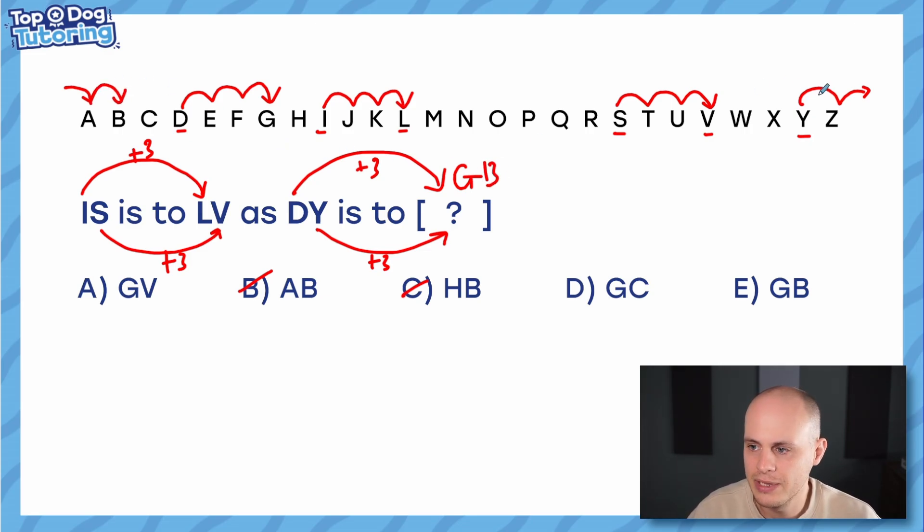Does that make sense? Let's just go over that again. So Y goes one jump to Z, two jumps to A, three jumps to B. Very much bear that in mind now for the next questions because you might see a bit more of that. We've got our answer. It was E - GB.